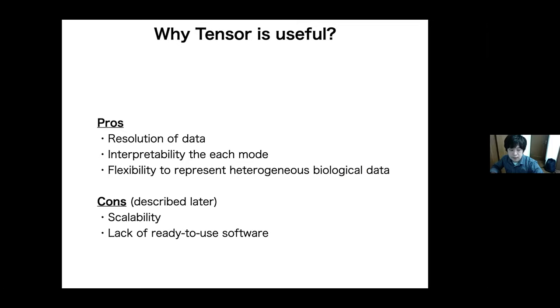Tensor is very useful. The advantages are that we can preserve the resolution of data and interpret each mode. We can flexibly represent heterogeneous biological data as well. Possible disadvantages are scalability and lack of ready-to-use software, and I will describe these later.